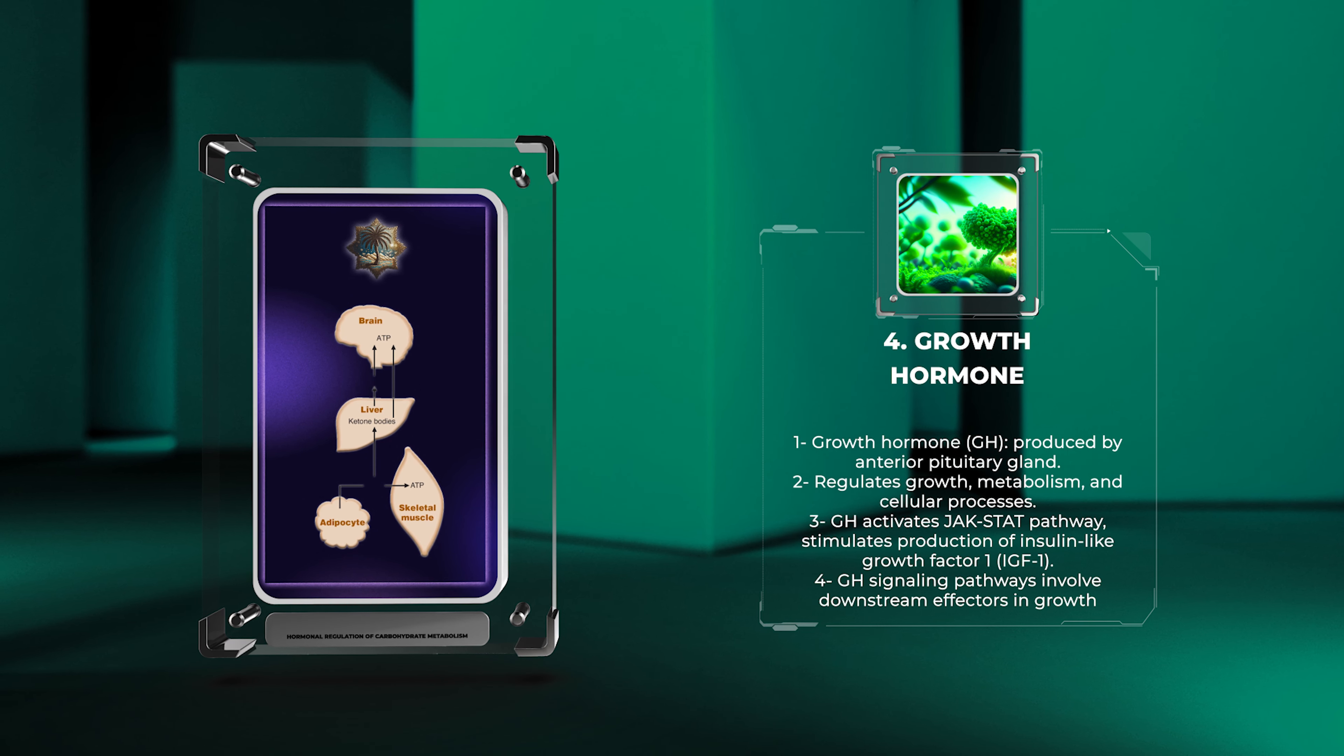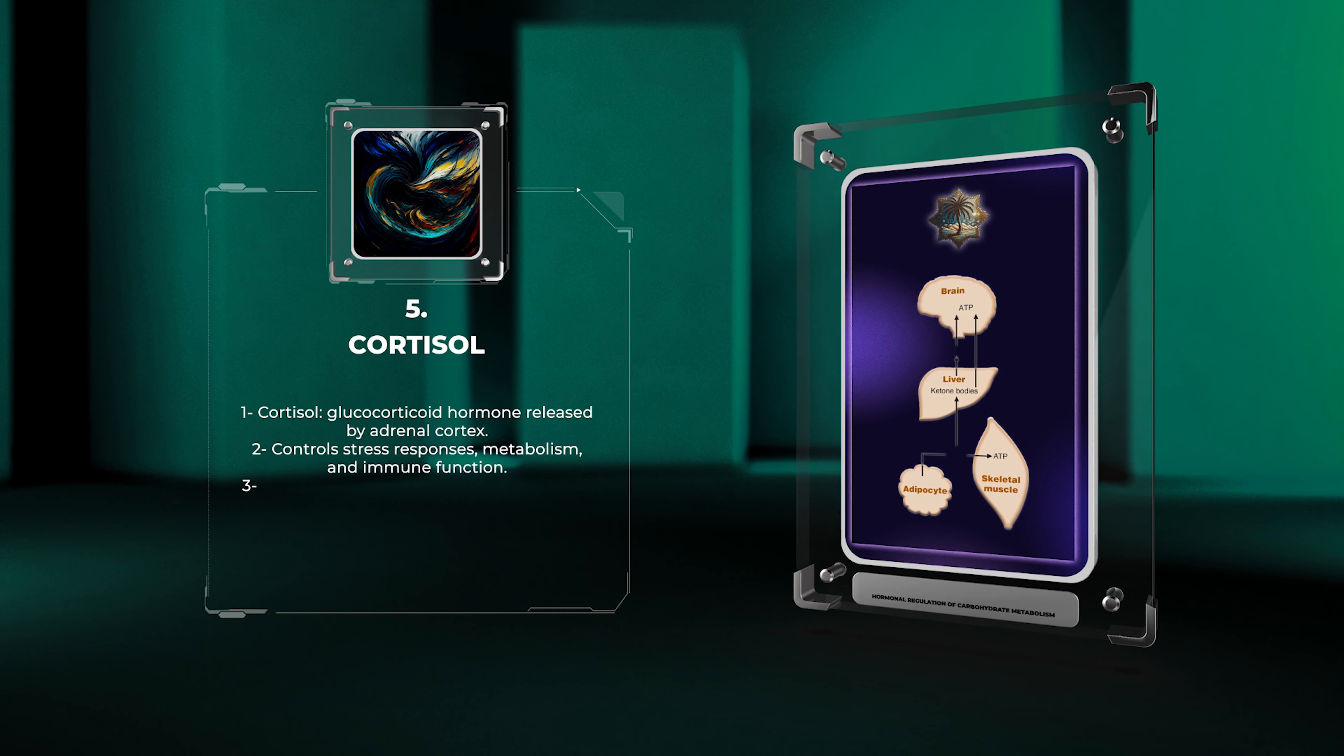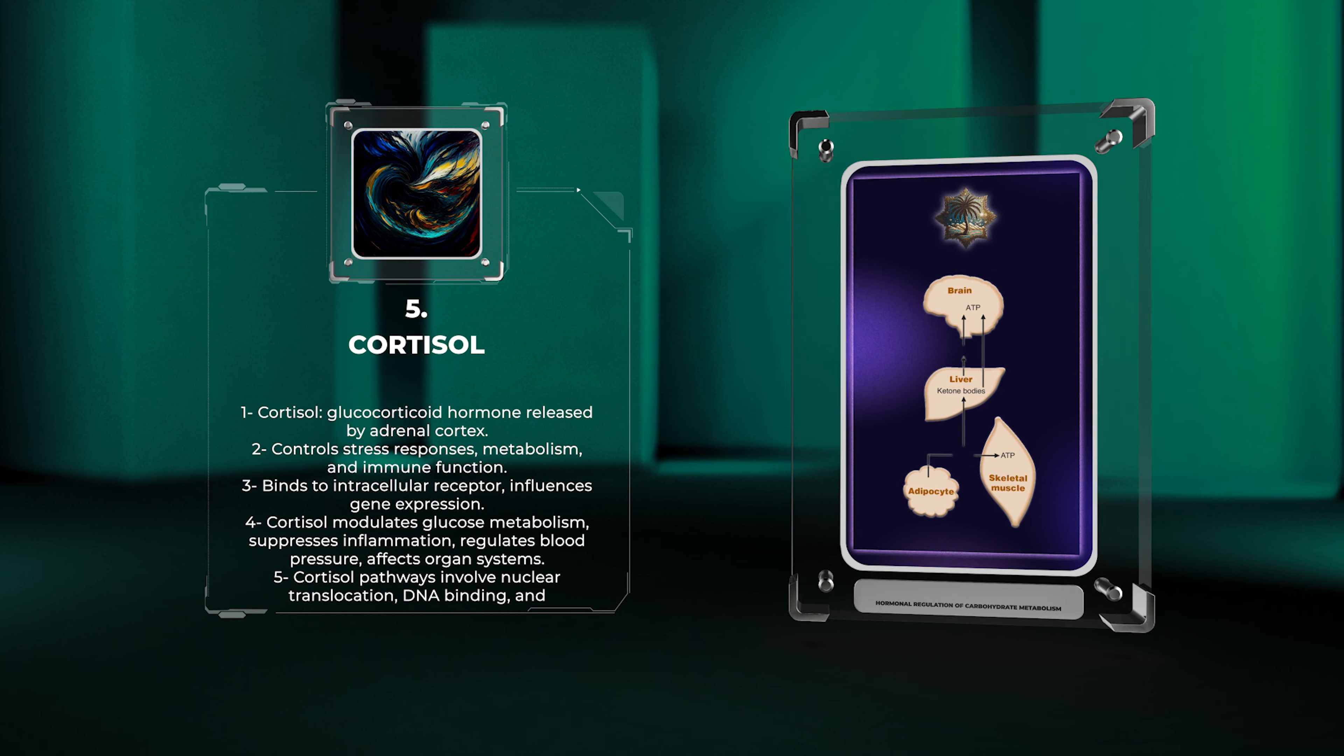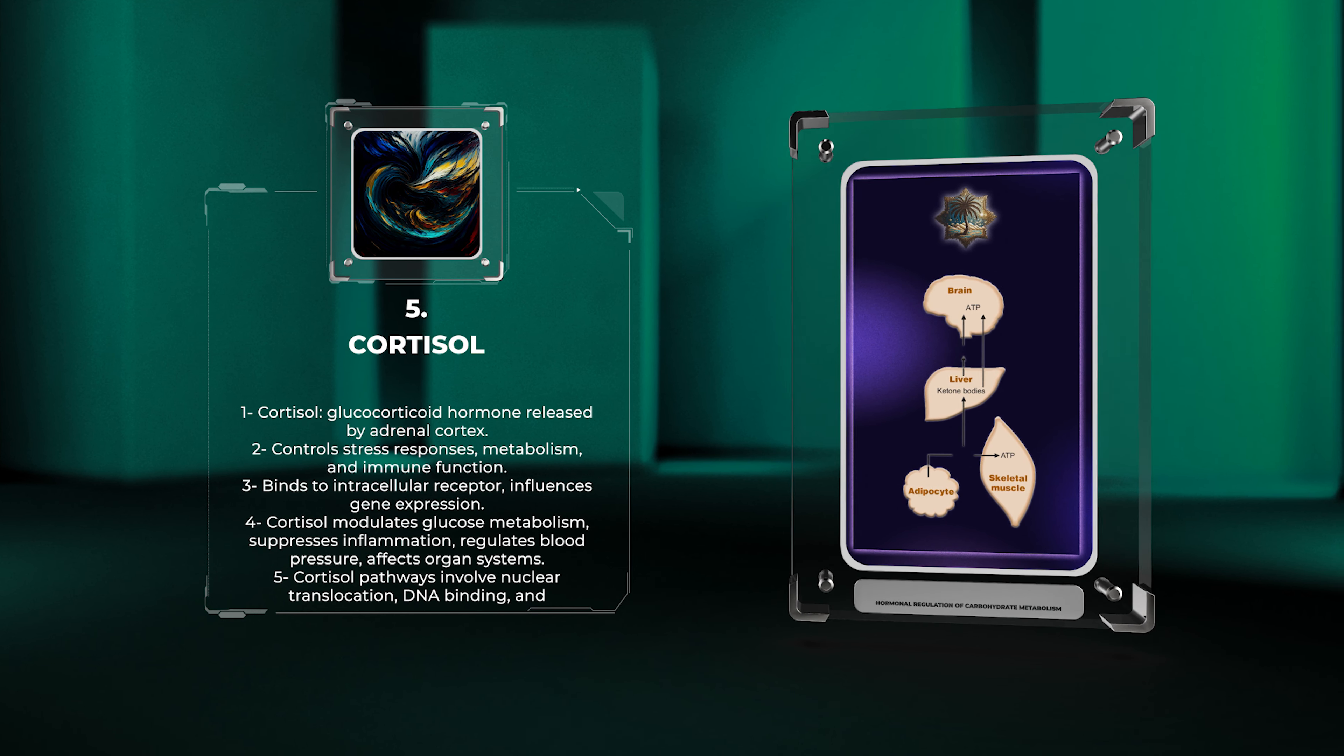Additionally, GH stimulates the production of insulin-like growth factor 1 (IGF-1) in various tissues, which further mediates its growth-promoting effects. The intricate GH signaling pathways encompass multiple downstream effectors involved in growth regulation, protein synthesis, and lipid metabolism.